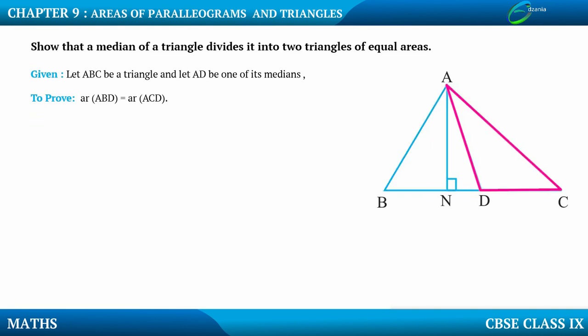First of all, we will do one construction. That construction is: we are supposed to draw perpendicular AN. So, we have drawn perpendicular AN. Now, if I concentrate on the first triangle — triangle ABD.